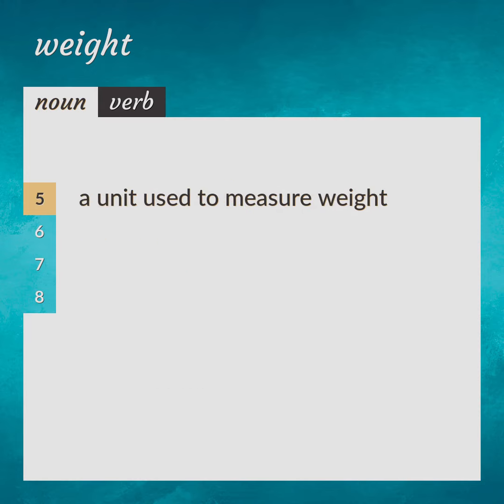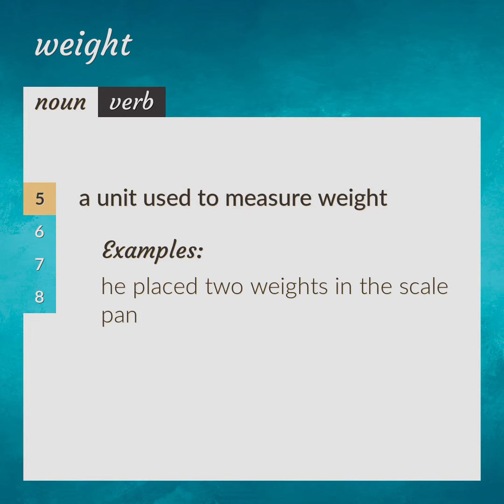Weighting — a unit used to measure weight. He placed two weights in the scale pan.